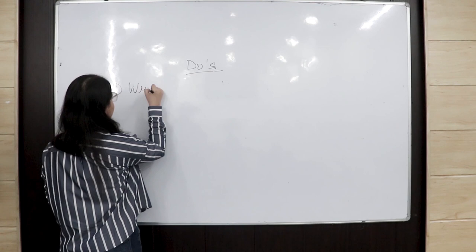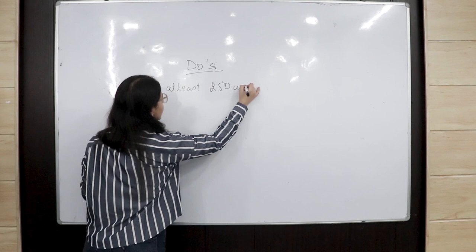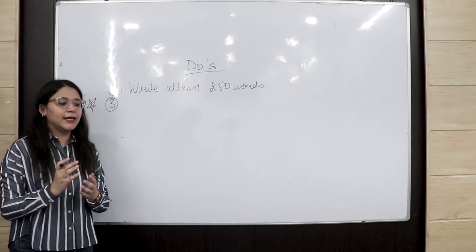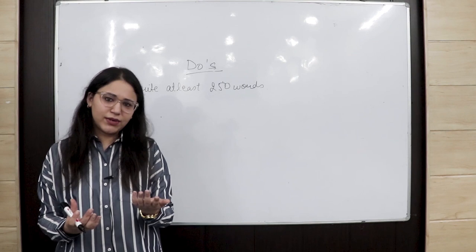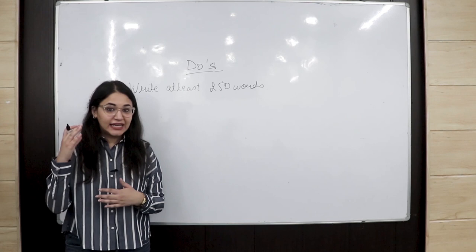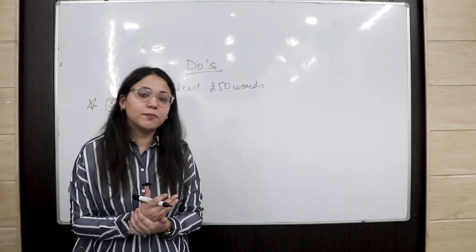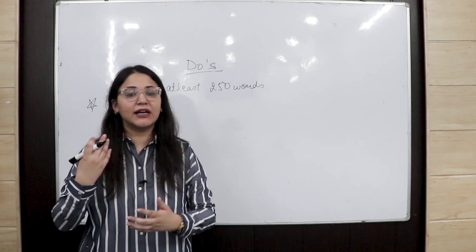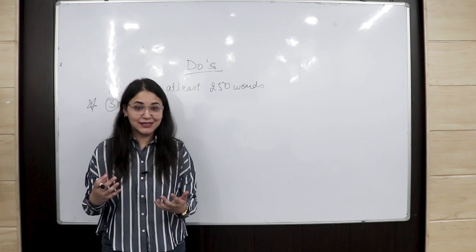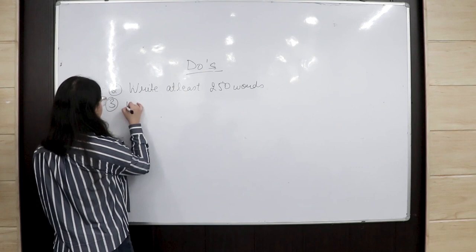The second do: write at least 250 words in Writing Task 2, up to around 300 words, but please do not write less than 250 words. The third do — mark this as very important — do not make your writing so complex that the examiner gets confused and has to re-read your sentences. Don't use overly difficult words or overly complex sentences. The more clarity you give the examiner through your essay, the more bands you will fetch.